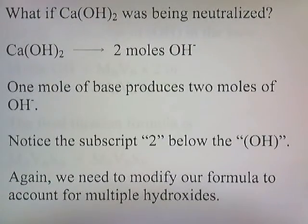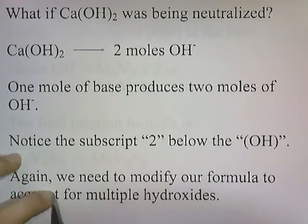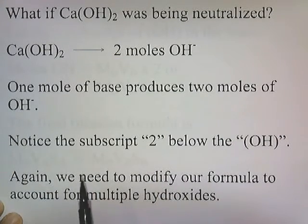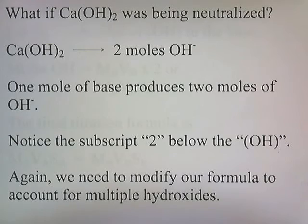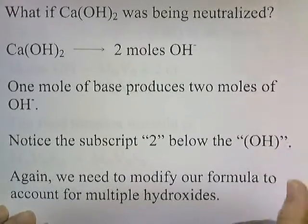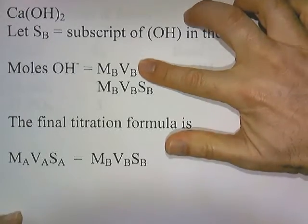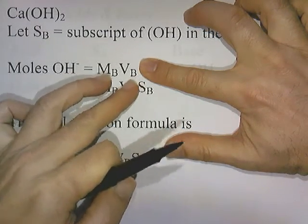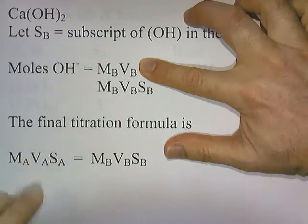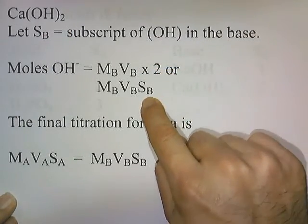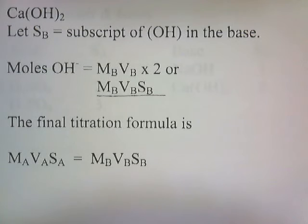What if calcium hydroxide was being neutralized? Calcium hydroxide produces 2 moles of hydroxide when placed in solution — 1 mole of base produces 2 moles of OH-. Notice the subscript 2 below the OH. We need to modify our formula to account for multiple hydroxides. We'll let SB be the subscript of OH in the base. The original formula was moles of hydroxide = MB×VB, but we have to multiply by SB to account for the 2.